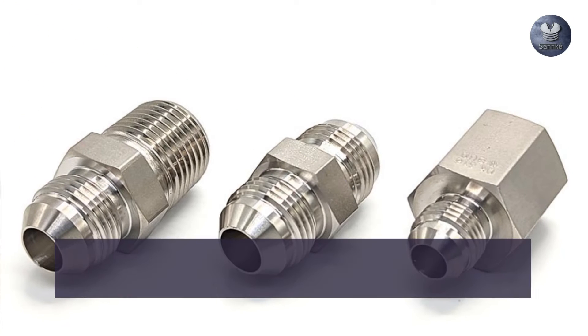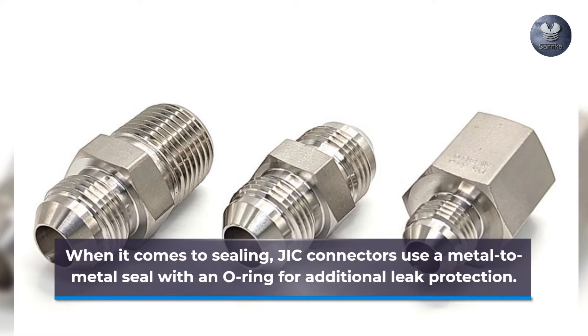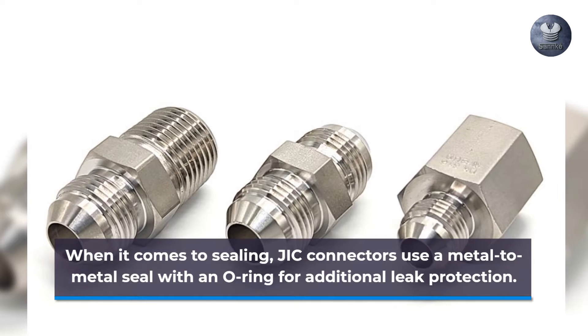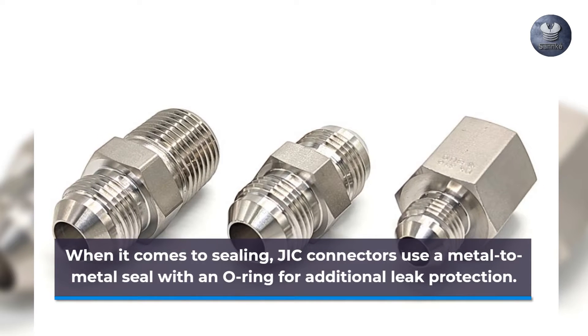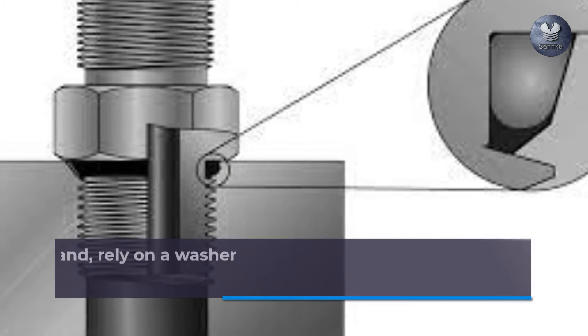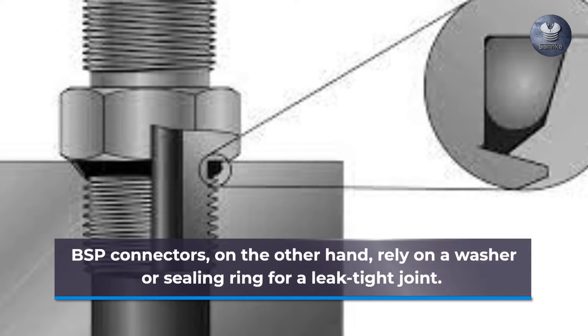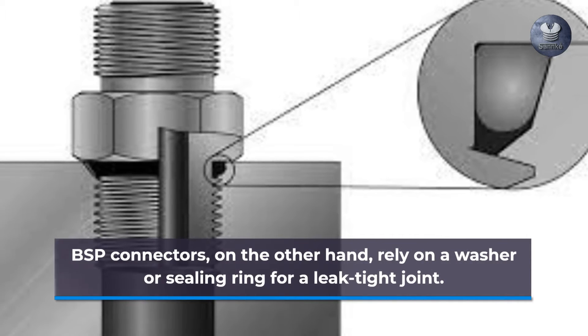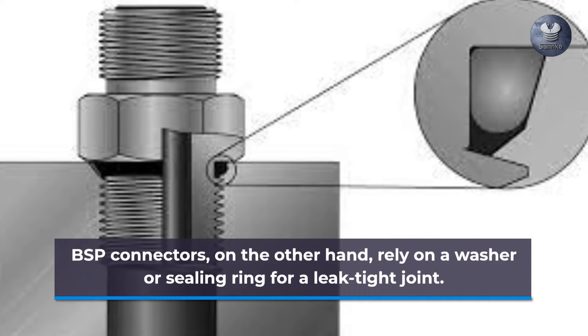When it comes to sealing, JIC connectors use a metal-to-metal seal with an O-ring for additional leak protection. BSP connectors, on the other hand, rely on a washer or sealing ring for a leak-tight joint.